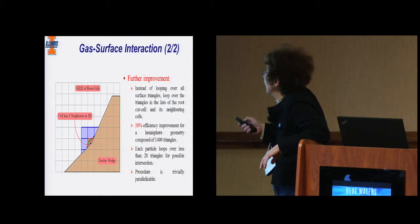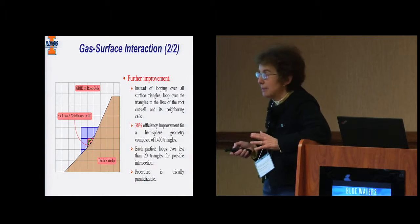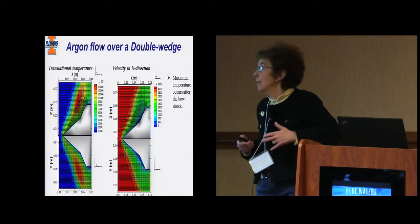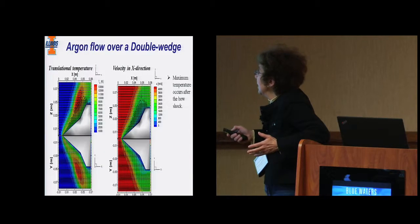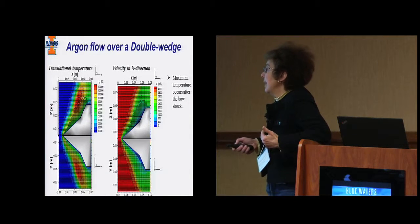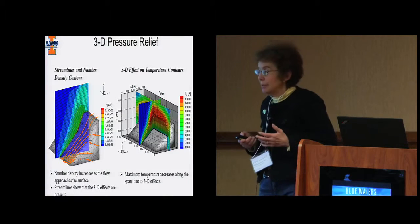When the particle hits the wall, not only do you have to know the volume, but you also need a gas surface interaction model. There's a smart way to do it and a way that's not so smart. We improved the method by using the root cell structure, trying to find cells close to the wall so we could minimize the amount of checking. You can see we've thought seriously about how many triangles a particle has to check. We've improved the efficiencies in a very parallel format.